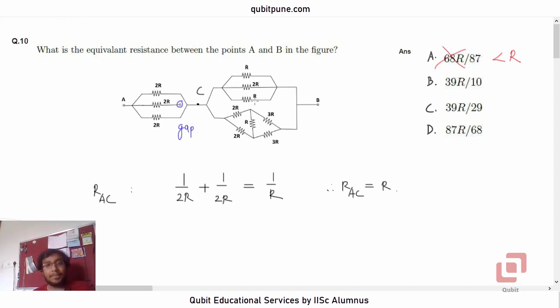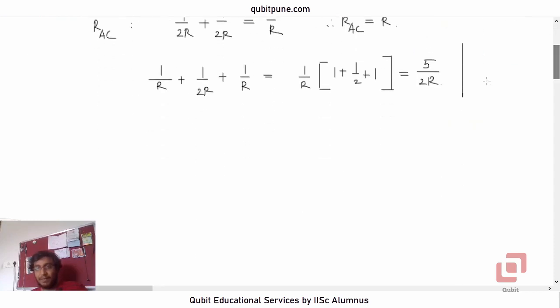Let us call this point as D. Let's calculate the top branch resistance now, which is R, 2R and R connected in parallel. So we will have 1 upon R plus 1 upon 2R plus 1 upon R. How much will that be? Take 1 upon R common. So it will be 1 plus half plus 1. 1 plus 1 is 2, 2 plus 1 upon 2 is 5 by 2. So what will be the reciprocal of that? That will be 2R upon 5.